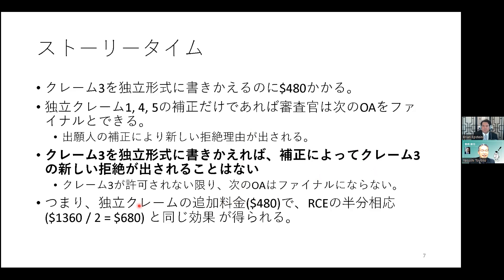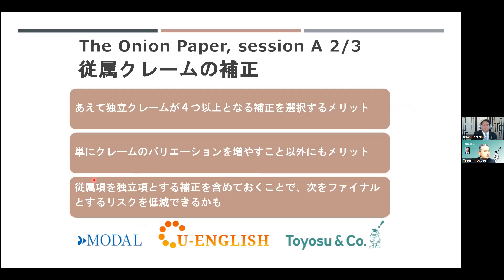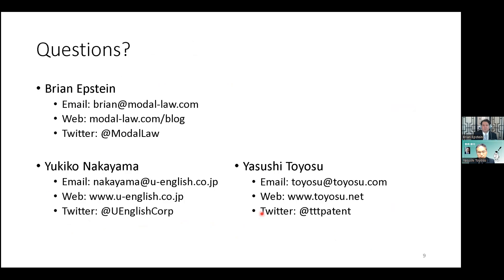補正していないクレームが含まれている限り、次のOAでファイナルにできないのです。480ドルかかるんだけど、次のOAがファイナルにならないと、自然的に次はRCEしかないのでRCEの費用がかかります。RCEの費用は1360ドルです。その分を節約できるので得だとブライアンは言います。これが来るかどうか半々の可能性と考えると、その半分の費用は680ドルですから、480ドルの追加コストで200ドル分得だという計算です。まとめますと、あえて独立が4つ以上になる補正も、従属を独立の補正を含めておくと次がファイナルになるリスクが減るため、得な場合があるということです。以上でございます。